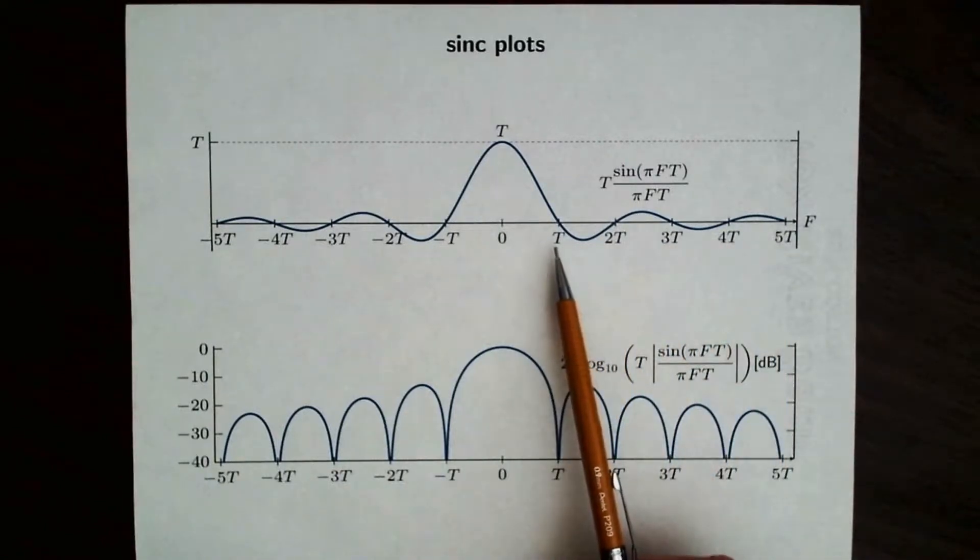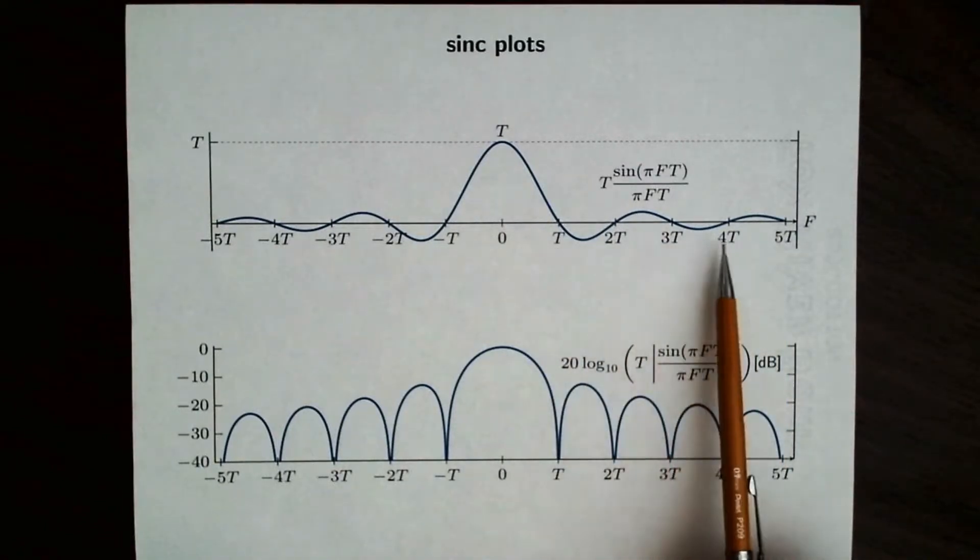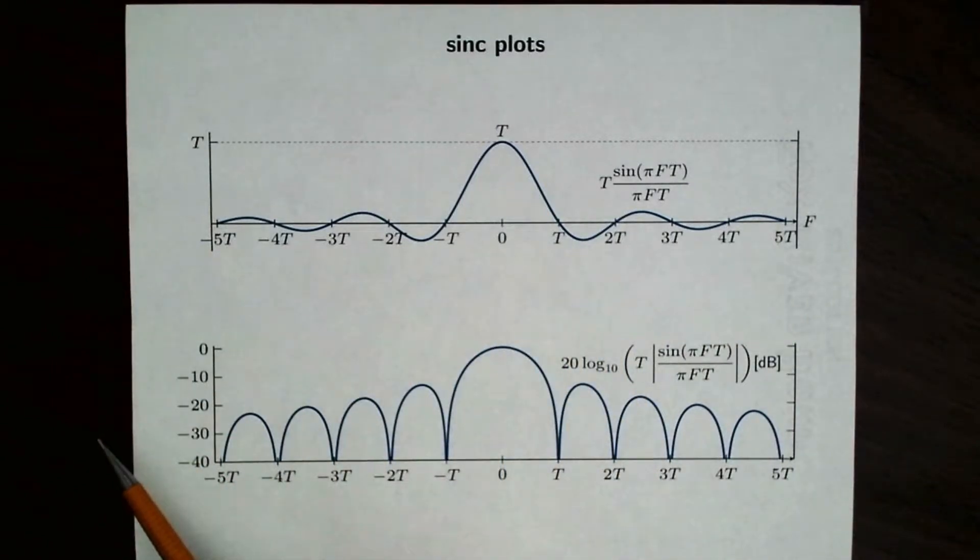And the other thing to notice is that the zero crossings occur at integer multiples of T. So we get a zero crossing at T, 2T, 3T, 4T, and so on, and also at the negative integer multiples of T as well.